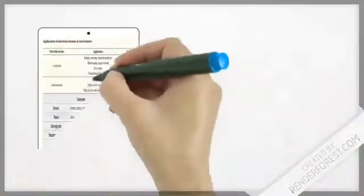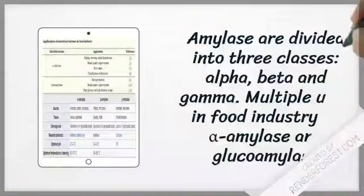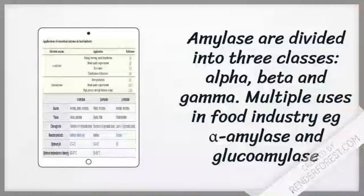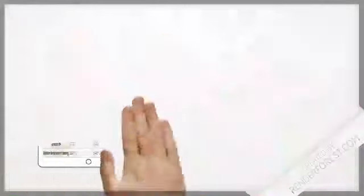The class of enzymes we focused on are the amylases. Amylases can be divided into three different classes: alpha, beta, and gamma. Today we will be focusing on just alpha-amylase and glucoamylase and their application in the food industry.